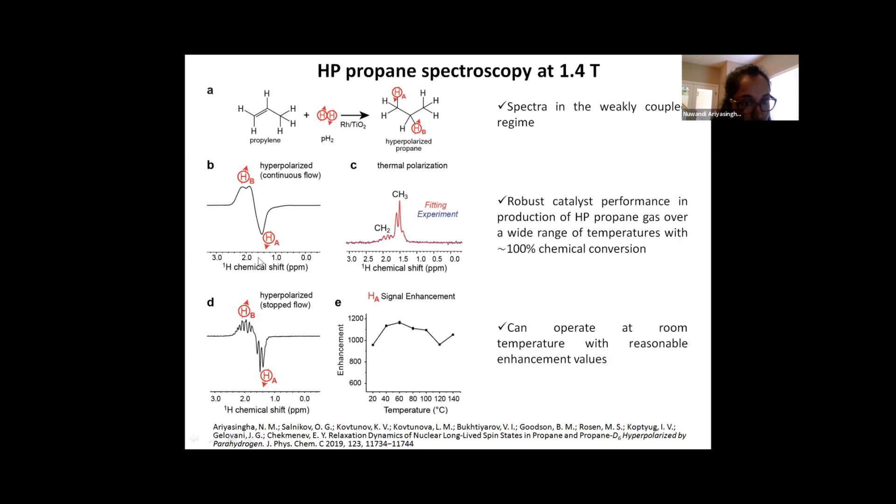So this spectrum which is shown under A was acquired in a continuous flow condition. And this one was acquired at a stopped flow condition and the spectrum of thermally polarized spectrum is given in C. And we also studied the effect of the temperature towards the enhancement. So from plot E here, we can say two important things. One is that a robust catalytic performance is expected over a wide temperature regime. And the second one or the more important one is that we can still get reasonably high enhancement values by operating the catalytic reactor at room temperature. So this is great because we don't have to go for high temperatures for HP propane production.